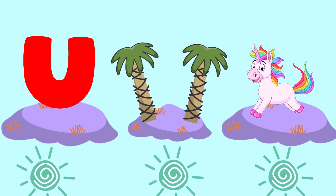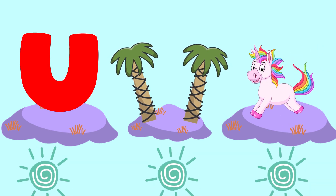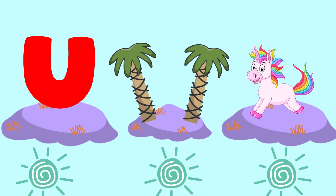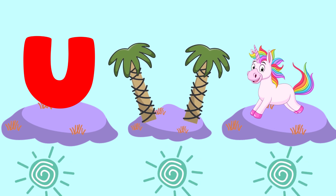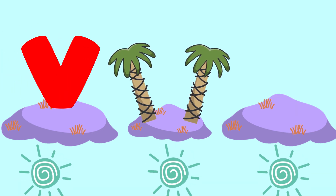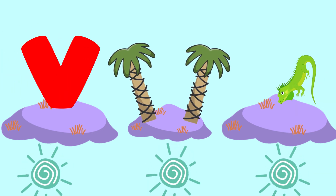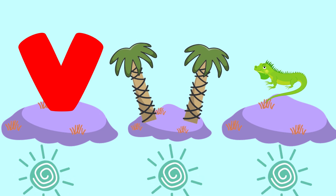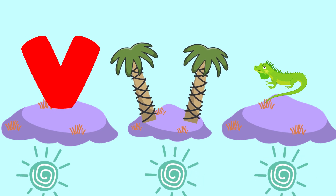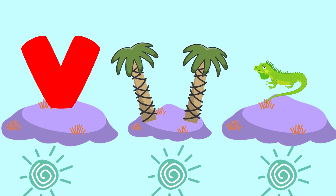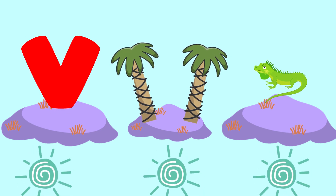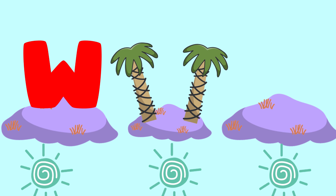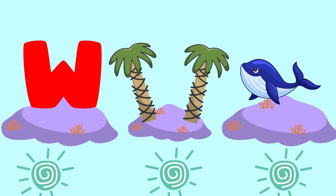Tiger. U is for Unicorn. U. Unicorn. U. Unicorn. U. Unicorn. V is for Verenness. V. Verenness. V. V. Verenness. V. V. Verenness.